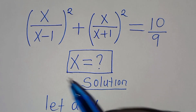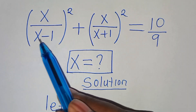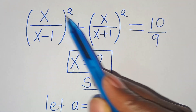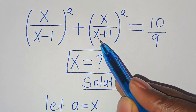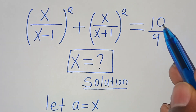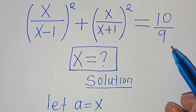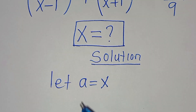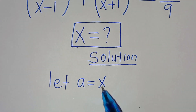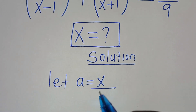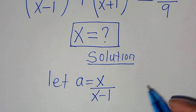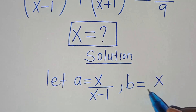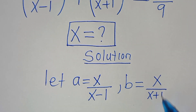Hello everyone, you are welcome to solve this nice algebra problem: (x/(x-1))² + (x/(x+1))² = 10/9. What are the values of x? The first step is we let a = x/(x-1) and we let b = x/(x+1).